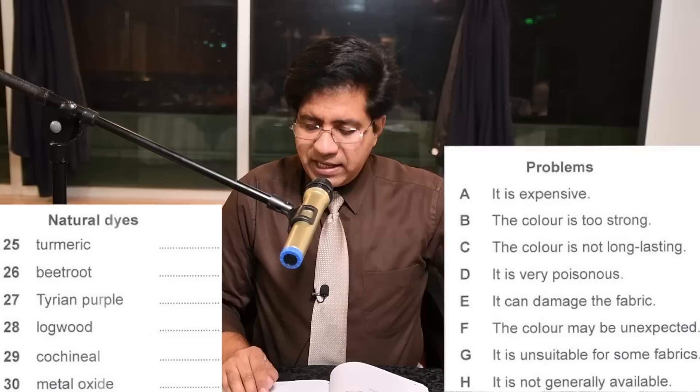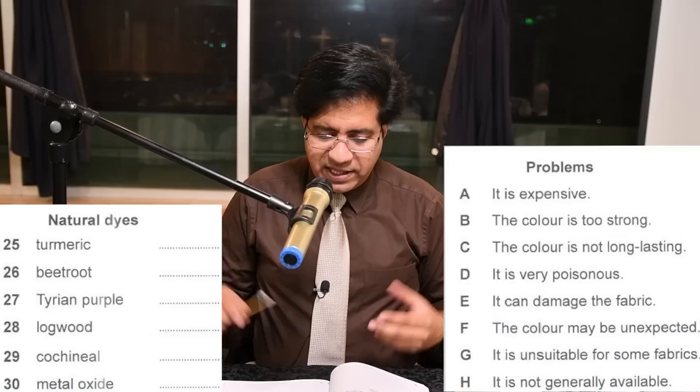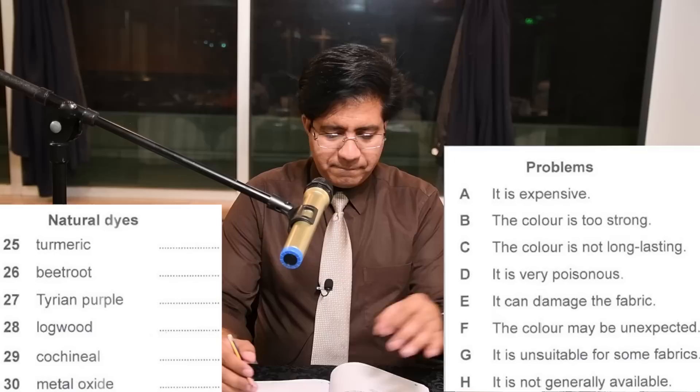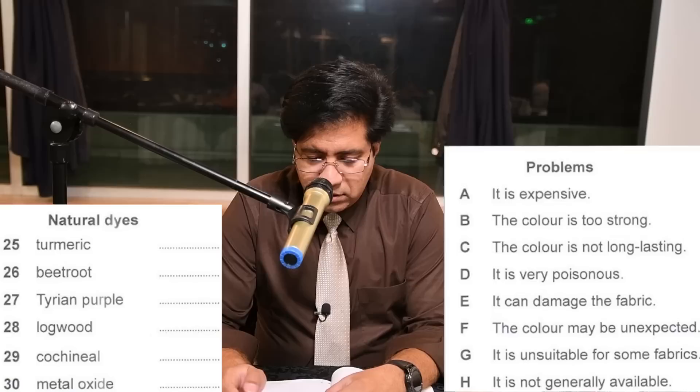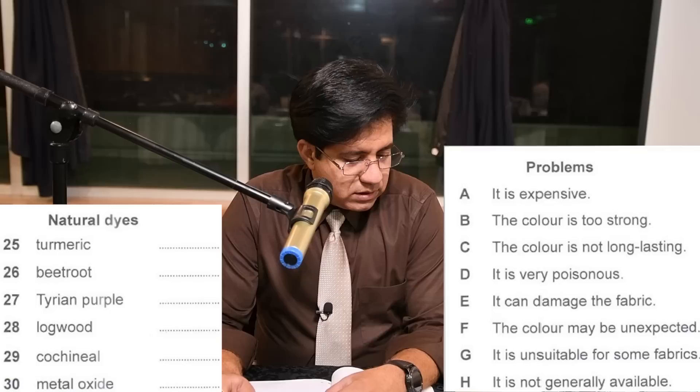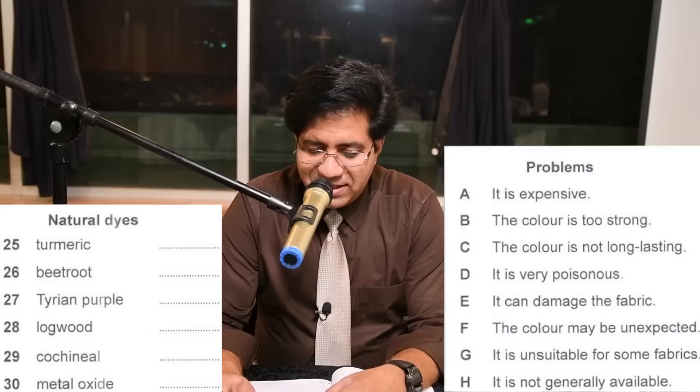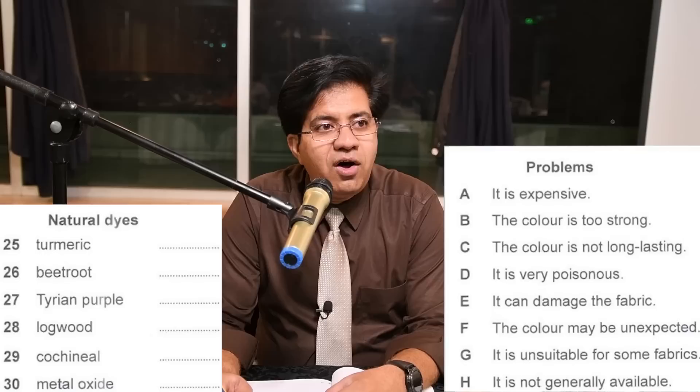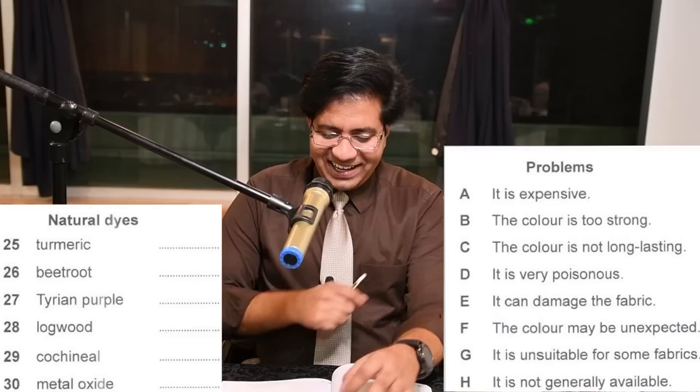Question 25: turmeric. The color is great — a really strong yellow, generally used in dishes like curry, and quite good for your health when eaten. But when used as a dye it's not permanent. A few washes and it's gone. So 'not long lasting' means 'not permanent' — the answer is C.